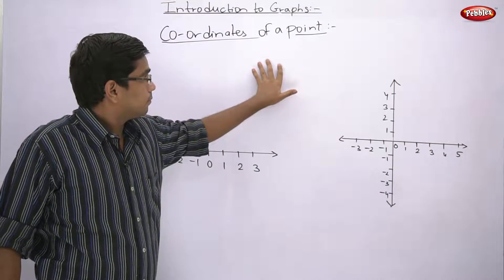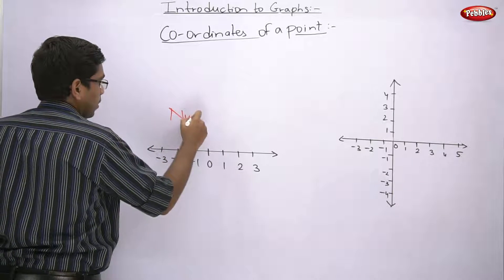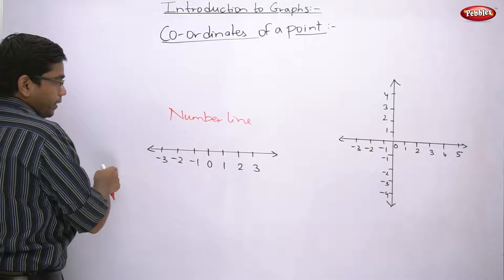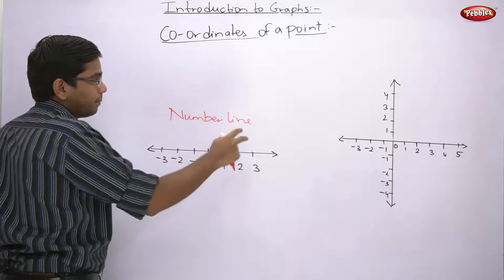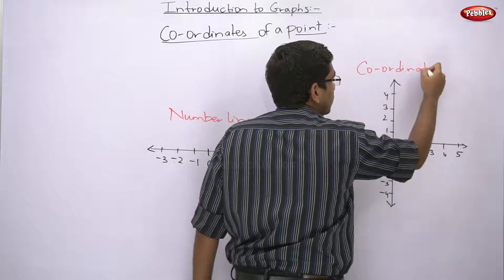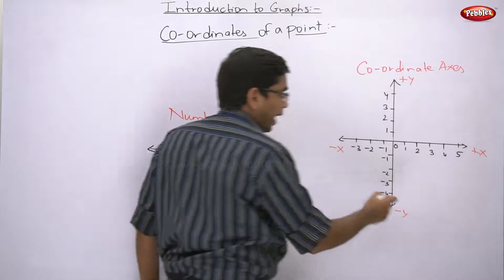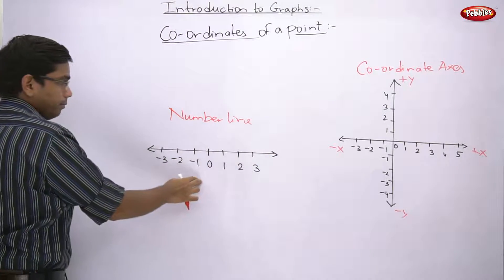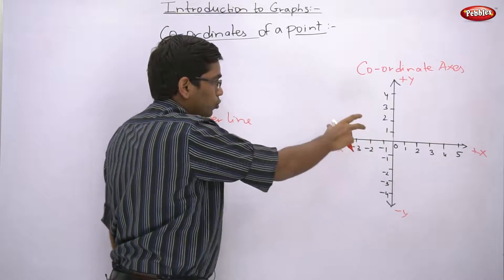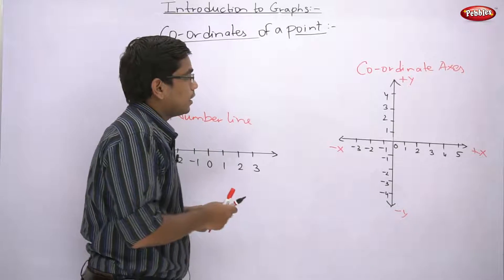Next part is Chapter: Coordinates of a Point. This topic is very easy. For this, first let us look at the number line. This is a number line — zero, positive one, two, three up to infinity, and negative minus one, minus two, minus three up to negative infinity. This number line is actually a part of a bigger figure. These are known as coordinate axes — positive x-axis, negative x-axis, positive y-axis, negative y-axis. The number line is a small part of this. These two lines intersect at zero, where the x-coordinate and y-coordinate are both zero.